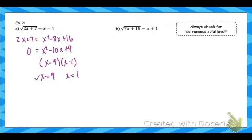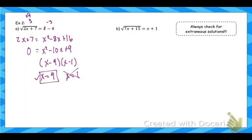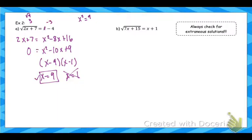Plugging in x equals 1: 2 times 1 is 2, plus 7 is 9, the square root of 9 is 3. But plugging into the other side gives negative 3, so those are not the same — x equals 1 is an extraneous solution. An important note: the square root function always gives the positive square root. If you have x squared equals 9, then x is plus or minus 3, but since we're given the square root function here, it only gives the positive value.